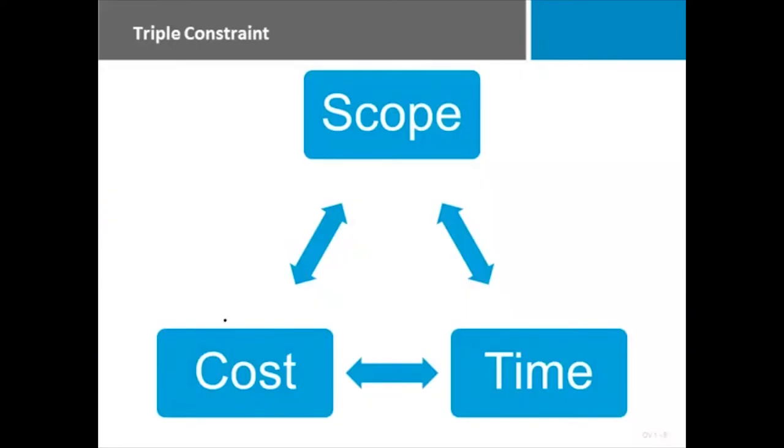I want to focus on three of the knowledge areas and view them as a triangle, and that is scope, cost, and time. We call these the triple constraint because if inside of your project you modify any one of these three things, the other two are going to be impacted. I drew a triangle here just to show you. Let's say I have scope here and I have time over here on this side and I have cost down here. Let's take an installation of a refrigerator in a new home that we're building.